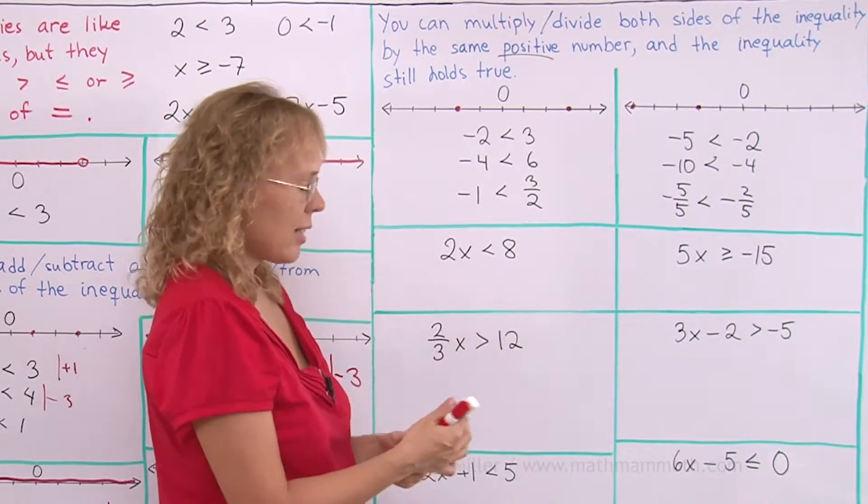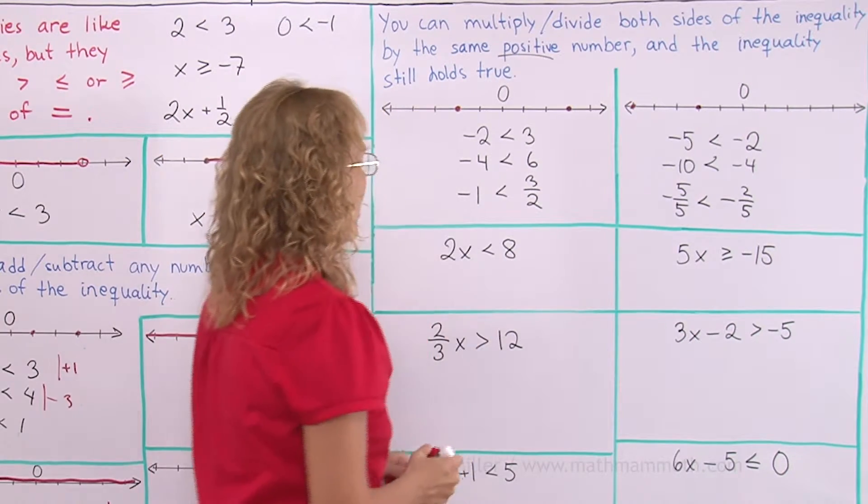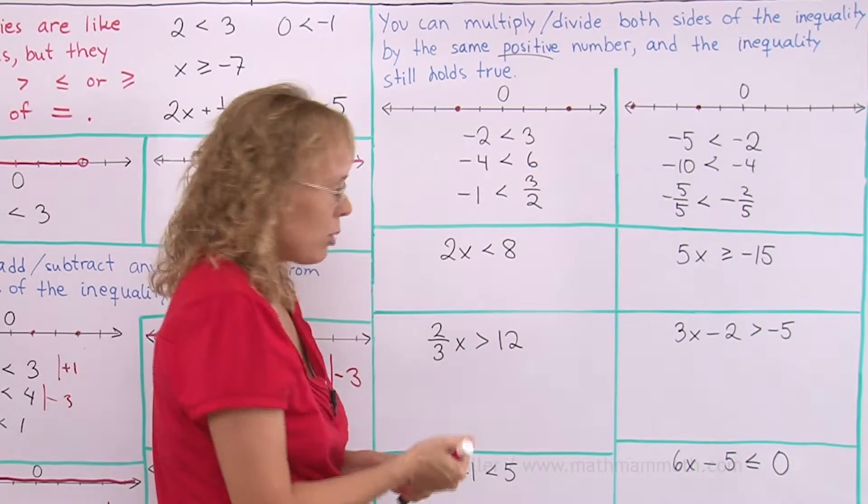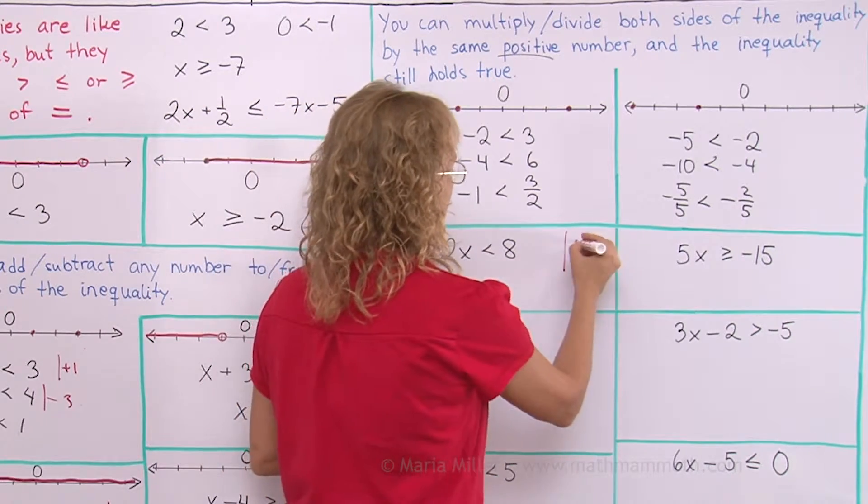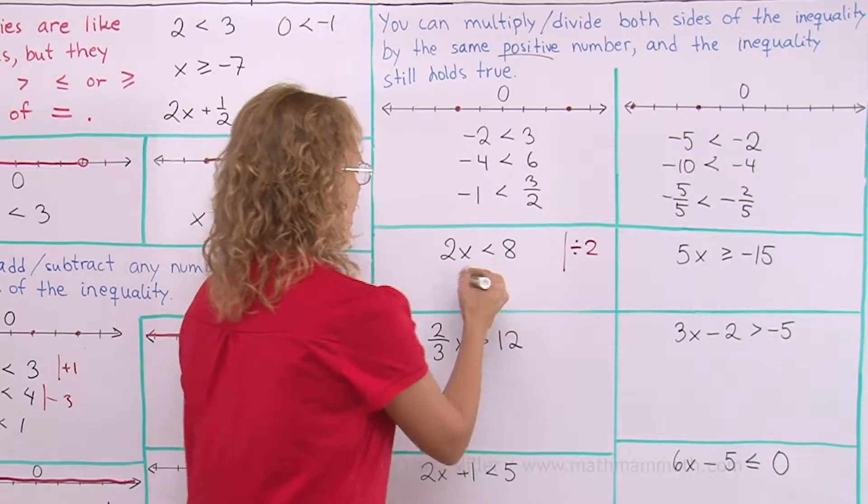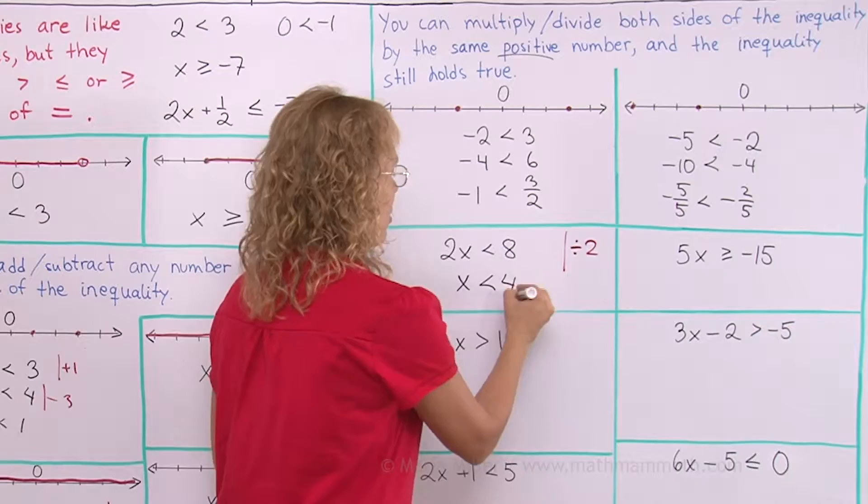Here, 2x less than 8. Think of it as being an equation, 2x equals 8. You would divide both sides by 2. So that's what I do here too. Divide both sides by 2, I get x less than 4. Very simple.